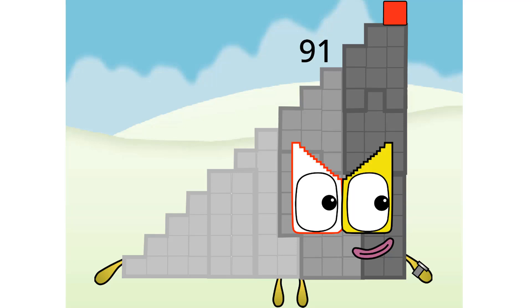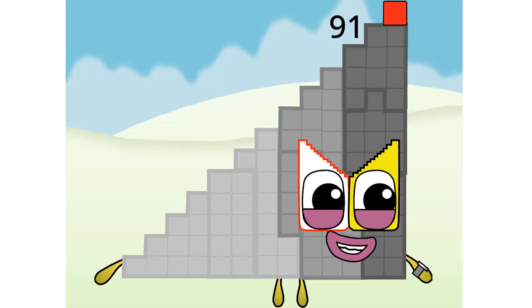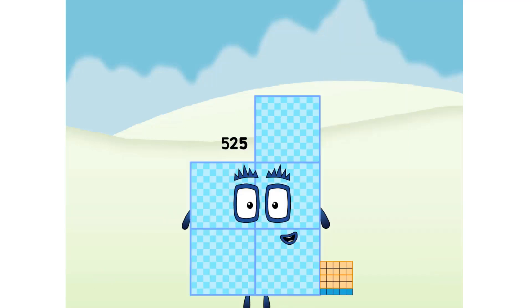15 times 35 equals 525. I am 525. I am a very happy number block. Unfortunately, if you're a number block, it is hard to make shapes like us. I'm too tall for the camera because I am five hundreds, two tens, and five ones.